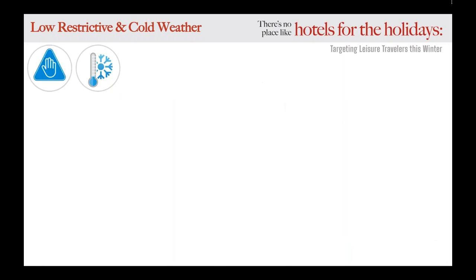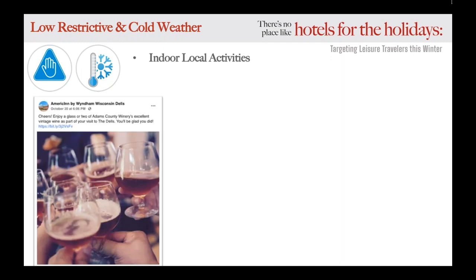Now for the final quadrant of this grid — let's keep that cold winter weather but loosen and ease the local COVID restrictions. This was about 23 percent of you according to that poll. Hotels in this category could be located in the upper Midwest or Great Plains, like the Dakotas. Similar to the previous quadrant, the cold weather will keep a lot of guests indoors — except in this region, travelers have a lot more options because of the lower restrictions. Make sure your social feed features plenty of places to eat, shop, and stay out of the cold.